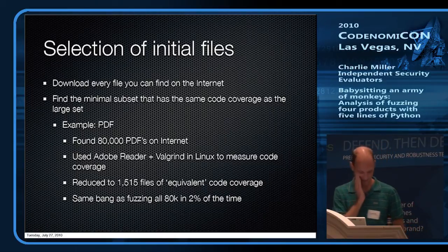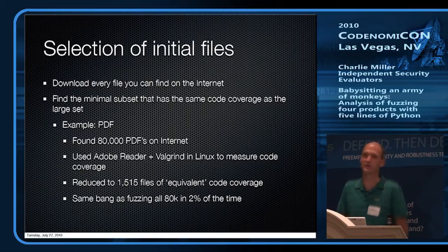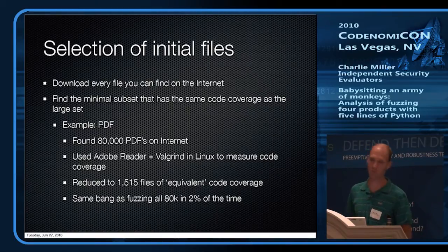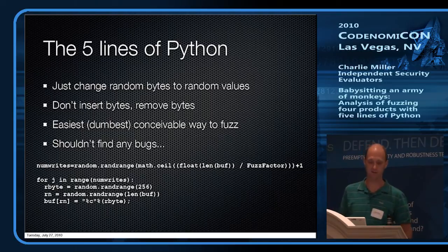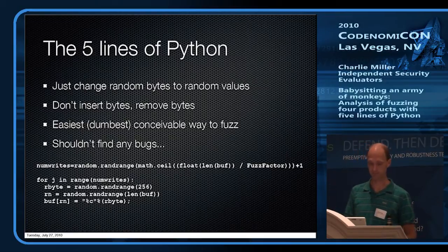Some people at CanSecWest asked how I knew there weren't viruses or exploits in those PDFs I downloaded. I said, well, they didn't take my bank account — that's how I know. There's been plenty of time they would have cleaned me out by now. As for the actual fuzzing, it was five lines of code: randomly pick a number of bytes, randomly pick positions in the file, randomly change those bytes to something else. That's it.